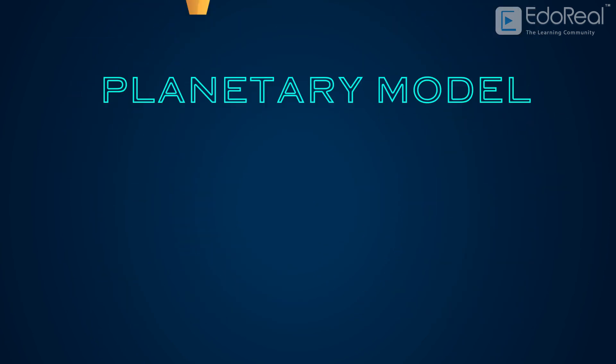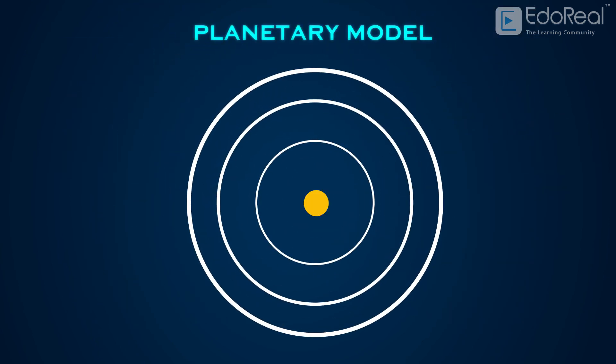This planetary model contains concentric circles around the nucleus, where each circle represents the energy level and orbital. These circles are called orbits.